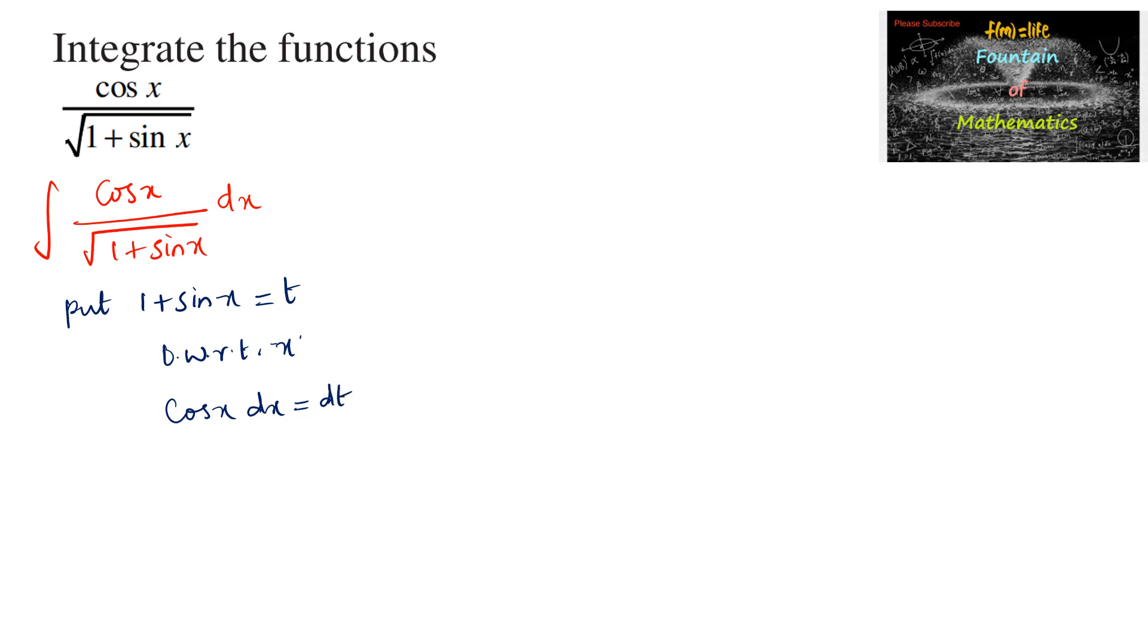On differentiating with respect to x we have cos x dx is equal to dt. So we got the numerator cos x dx is dt, so we can replace it and 1 plus sin x as t. Our integral can be taken as integral 1 upon root t into dt.